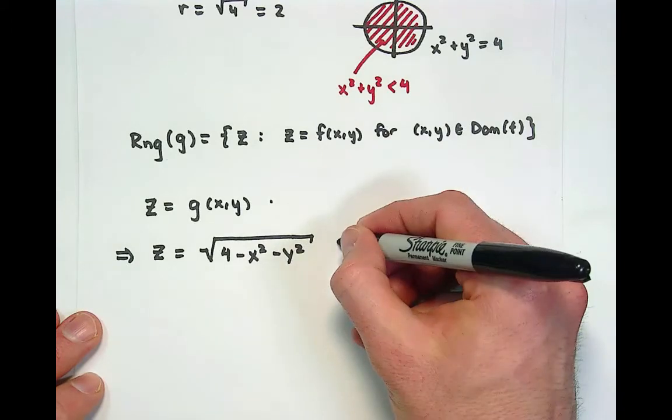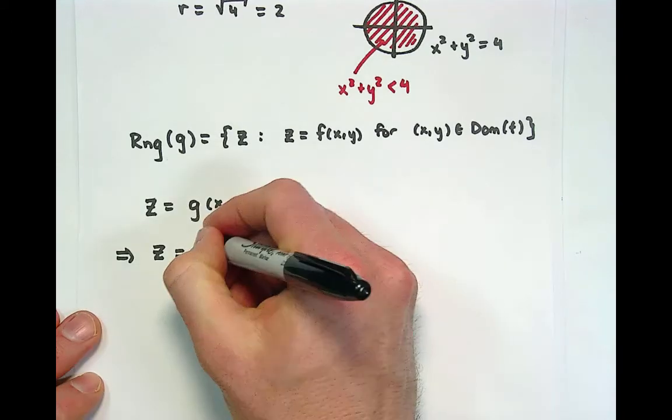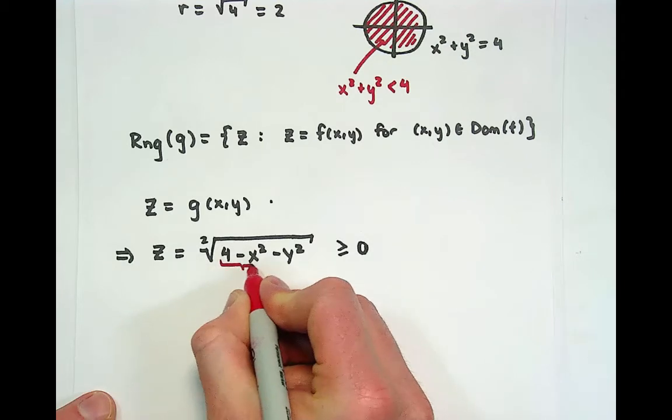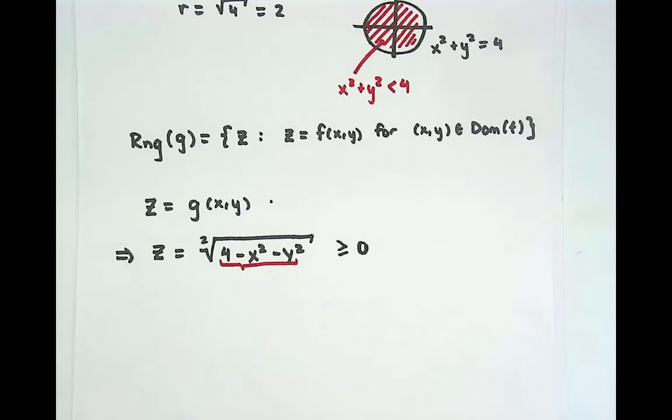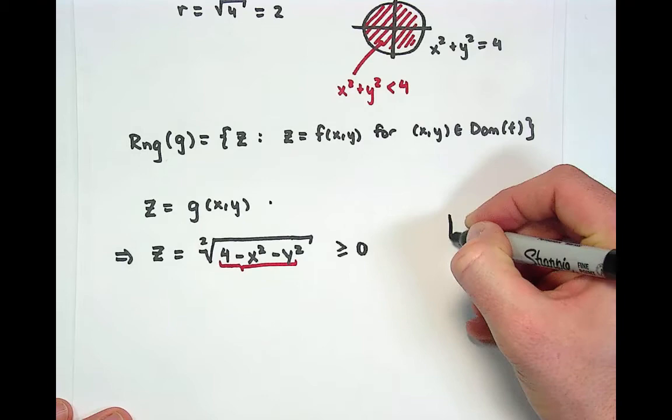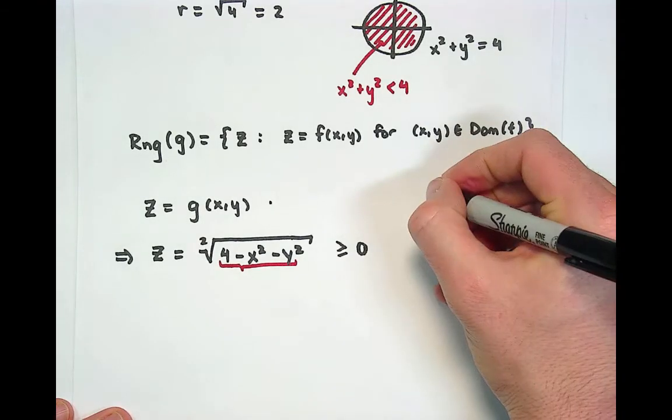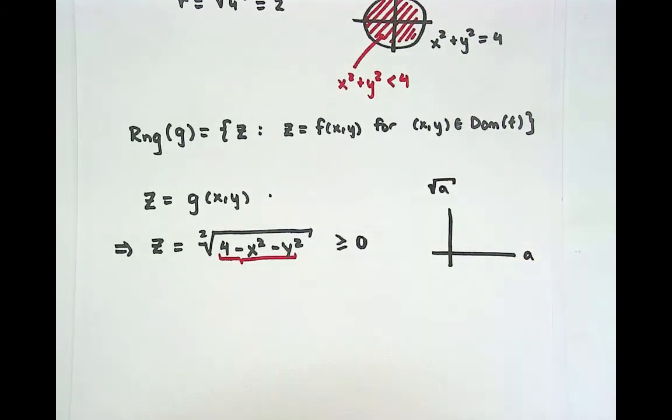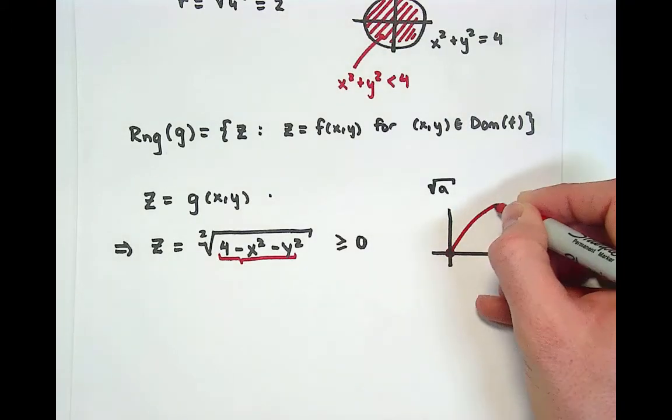We also know that this is going to be bounded below by 0 because the radicand, the thing inside, we've already said that this is going to get no less than 0, and the square root is a monotonically increasing function. If we look at the graph of the square root function, let's call this the square root of a, and we'll call this a.